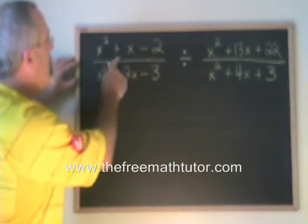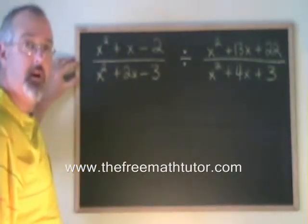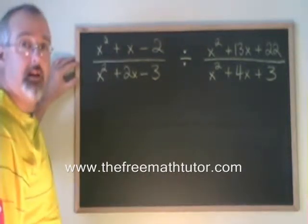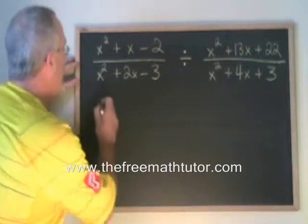In this question, we have a trinomial x squared plus x minus 2. What two numbers multiply to give negative 2 and add to give 1? They are 2 and negative 1.